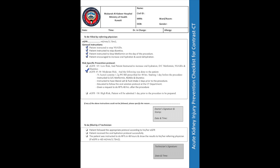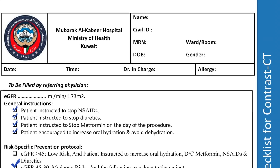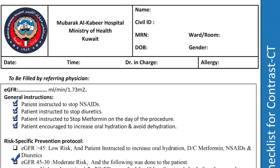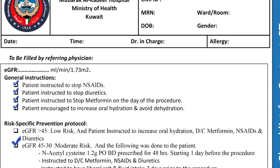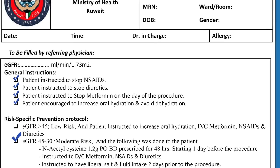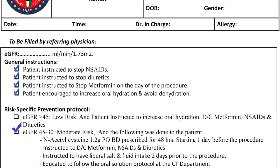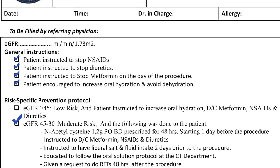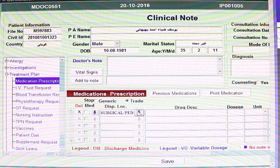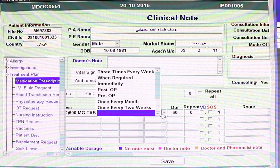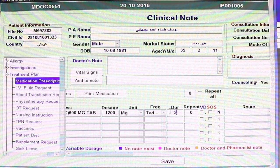If the GFR is between 30 and 45, the doctor should give the patient a specific preparation and indicate doing so by checking the relevant box. Those patients should be advised that they will also receive an oral preparation solution in the CT department on the appointment day. Acetylcysteine has to be prescribed through HIS — please ensure you choose the oral form.